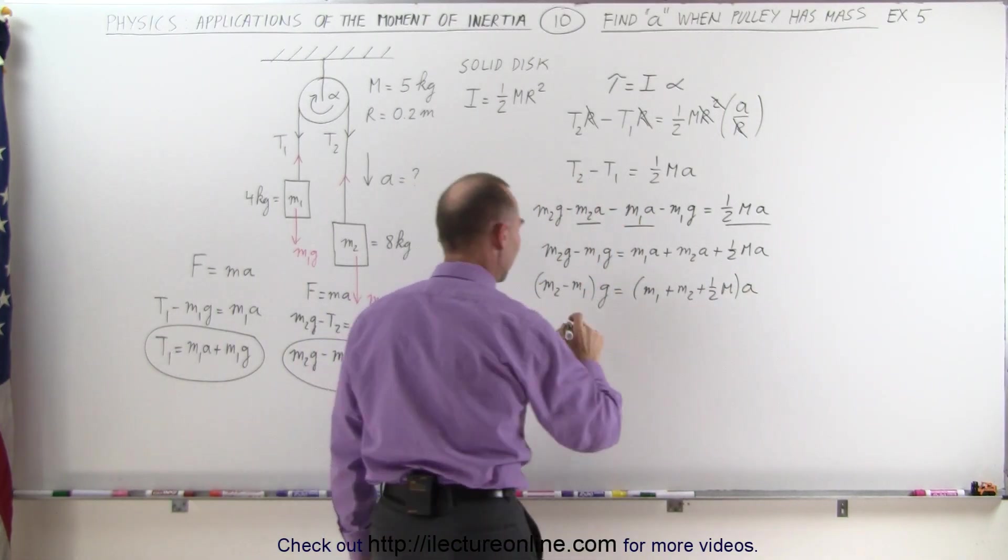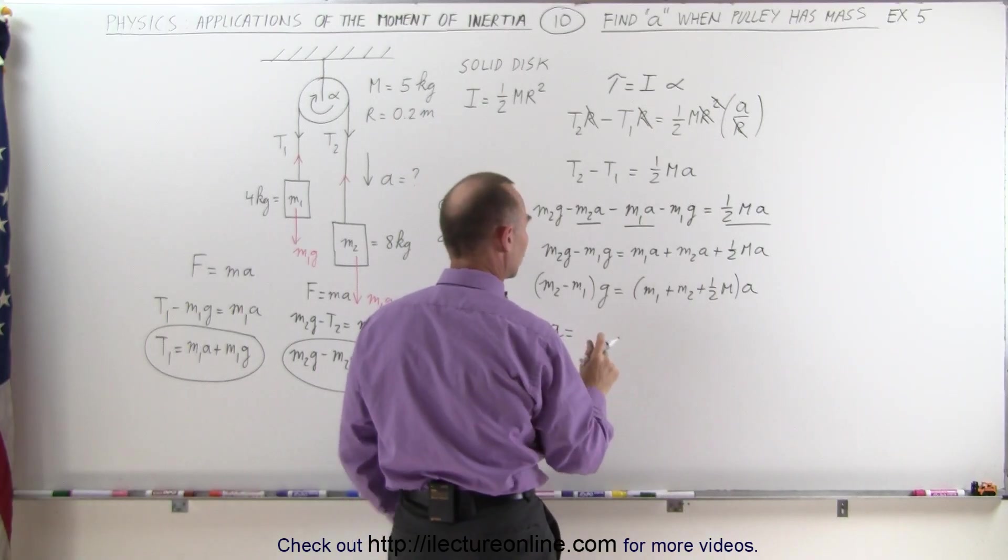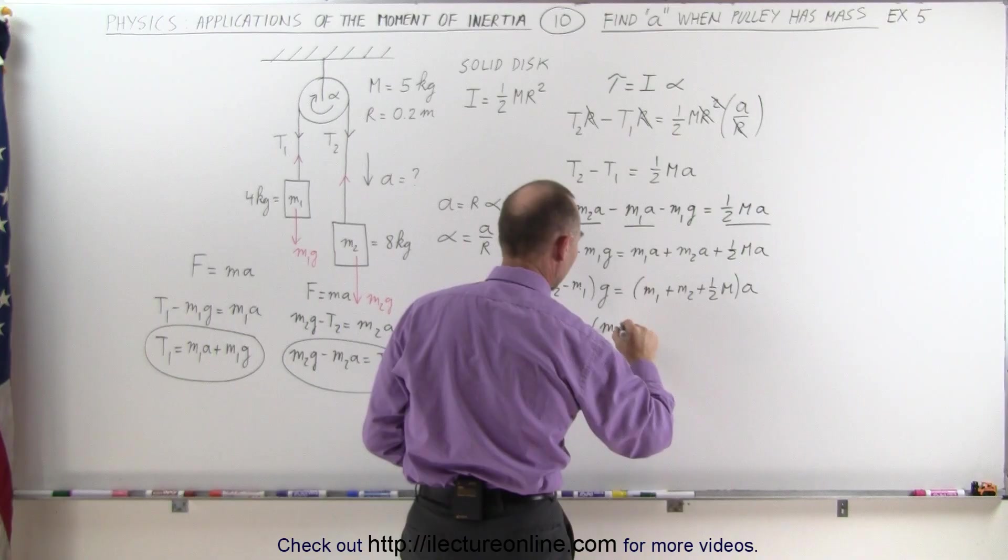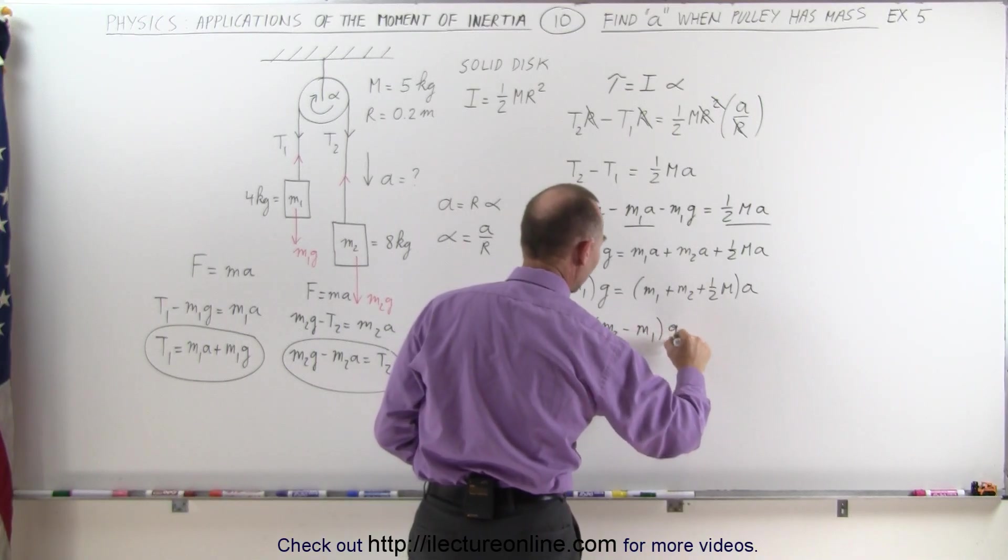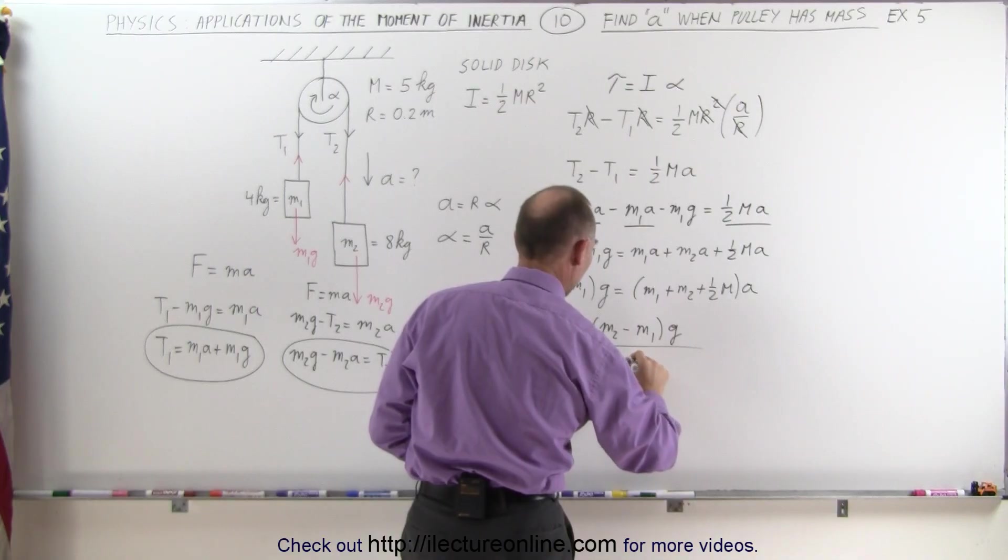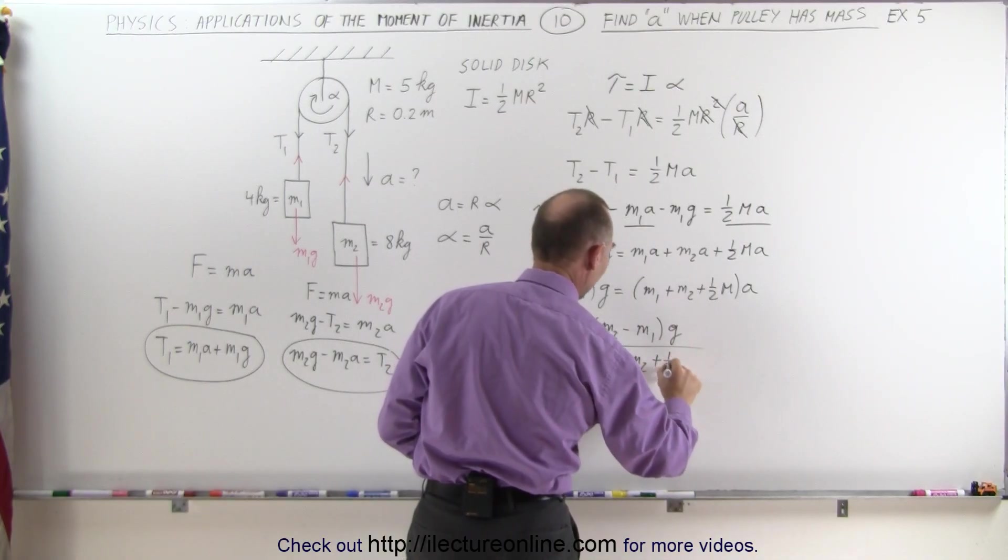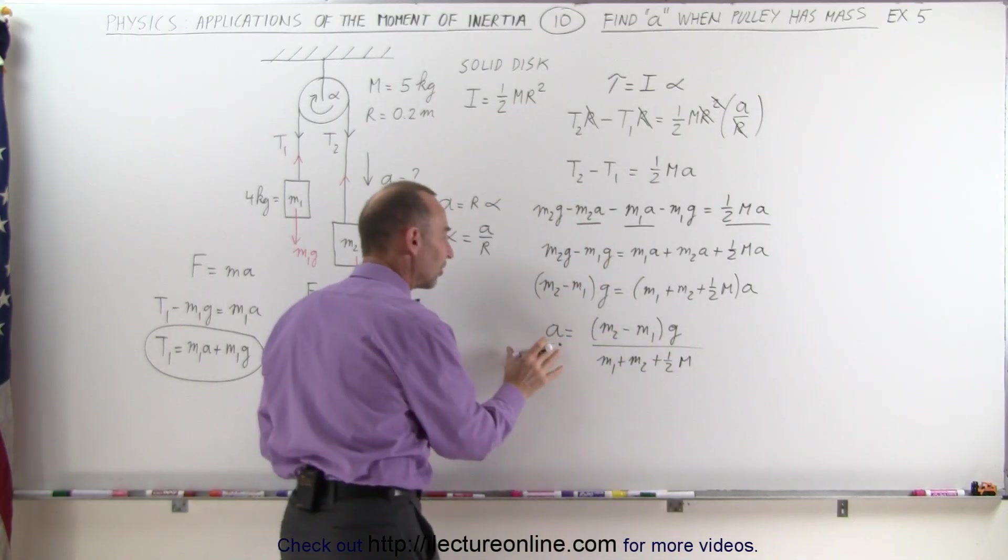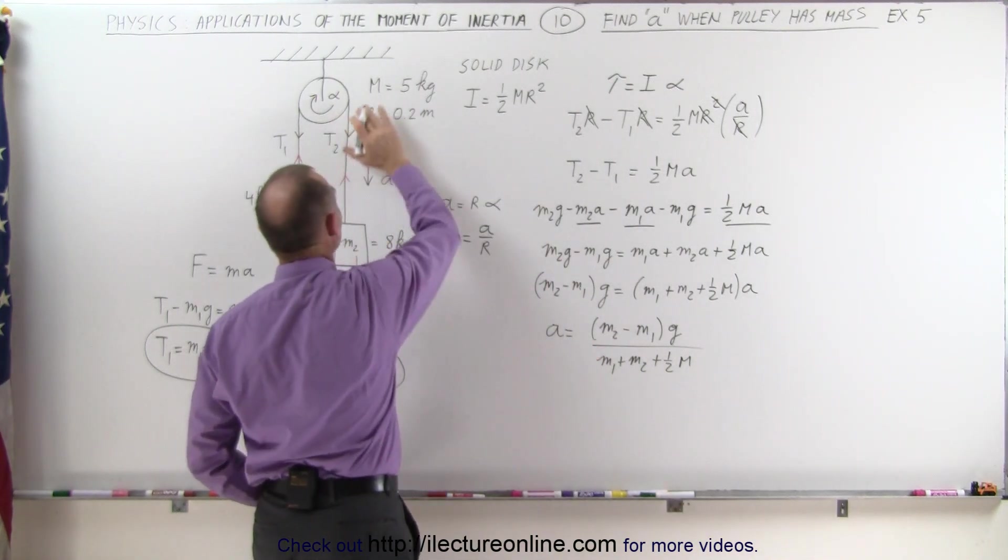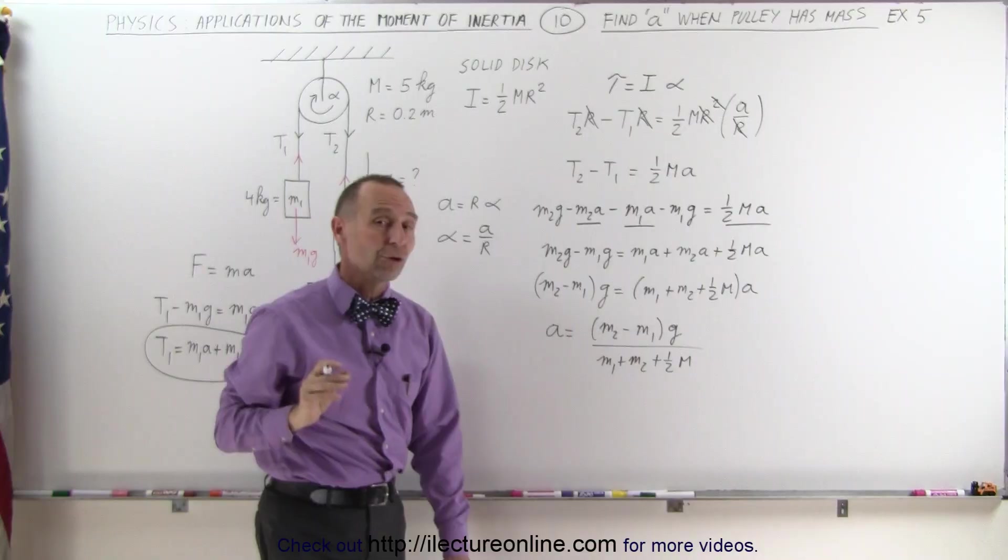And solving this for A, we get A is equal to the left side here, which is M2 minus M1 times G divided by the coefficient of A, which is M1 plus M2 plus 1 half times the mass of the pulley. So there's acceleration of the whole system, because we have to take into account the moment of inertia of the pulley.